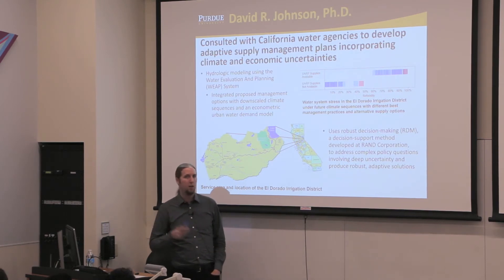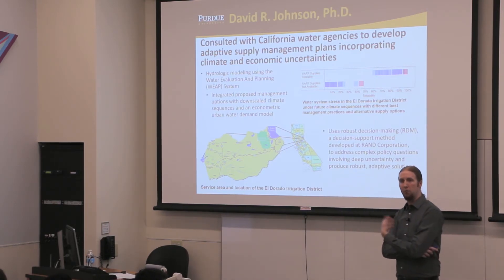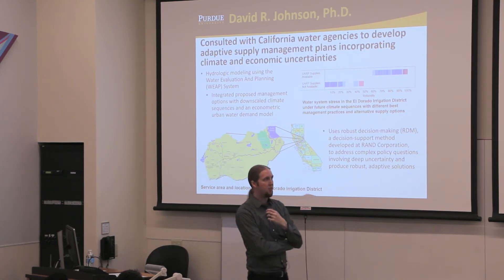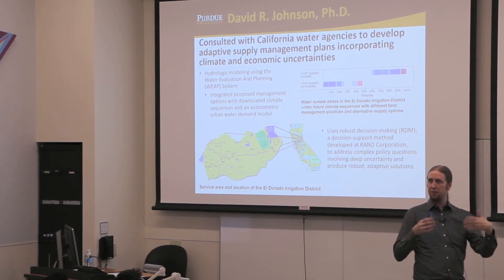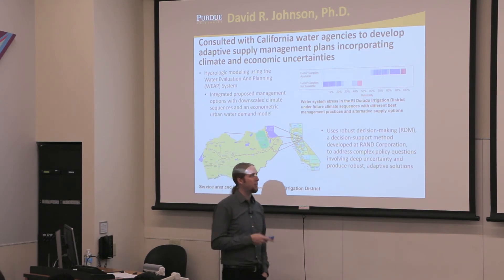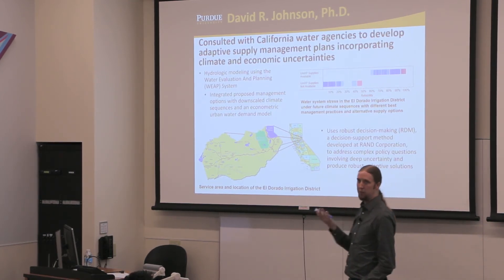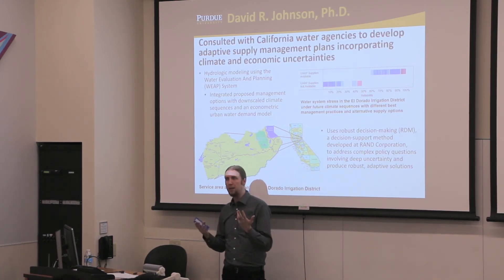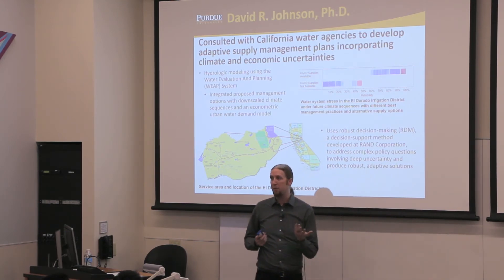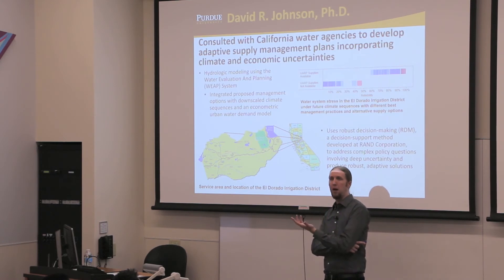This water agency was looking at a range of different policies to manage their future supply — everything from building a new surface reservoir, to expanding their gray water recycling program, to implementing efficiency measures like subsidizing low-flow shower heads or dual-flush toilet systems. They wanted a systematic way to evaluate what different combinations of strategies would be worth under different future conditions, to identify a robust set of options. We use the robust decision making decision support tool and method developed at the Rand Corporation, where I previously worked and am still an adjunct.